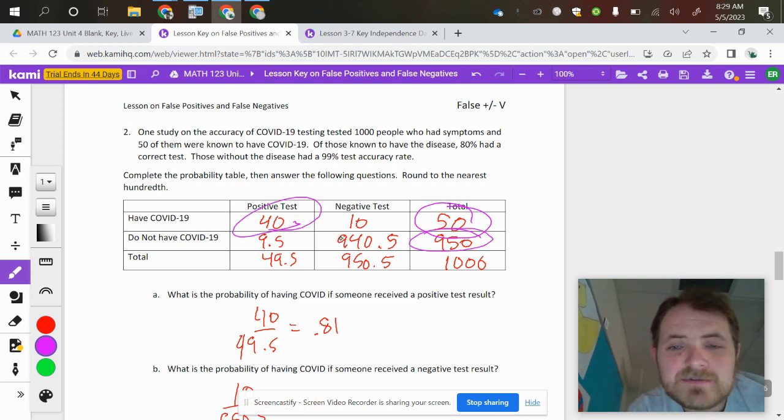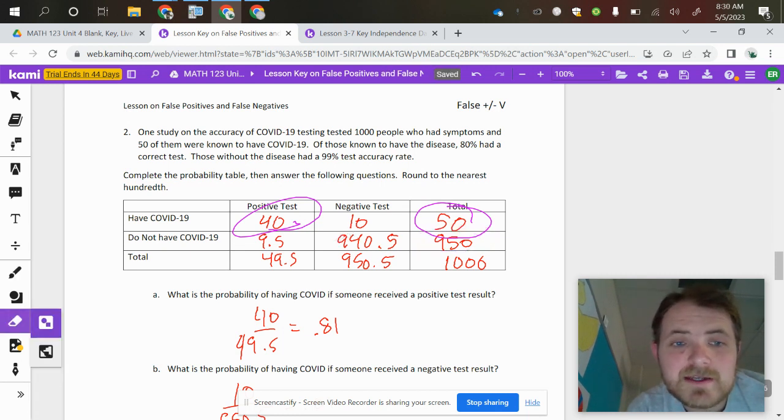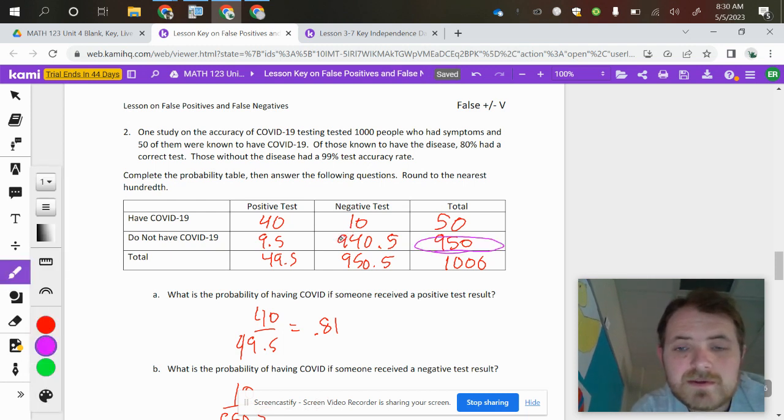And 80% of, sorry, that's of the people known to have the disease are going to have 80%. They're going to have a correct test. But people without a disease are going to have a 99% test accuracy rate. So if you do not have COVID, that means you should test negative, making 940.5, 99% of the 950 right there.